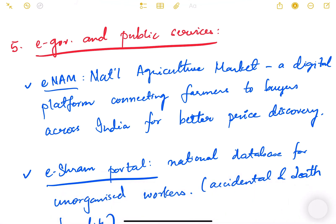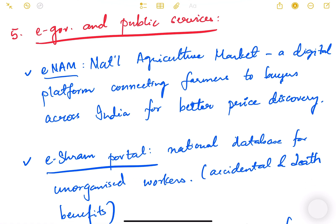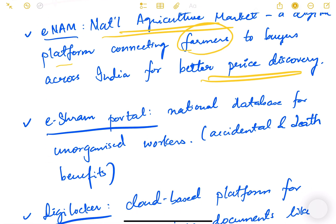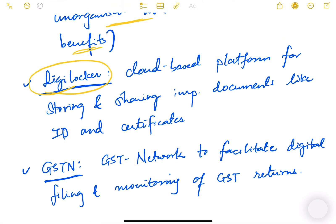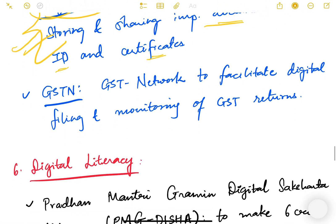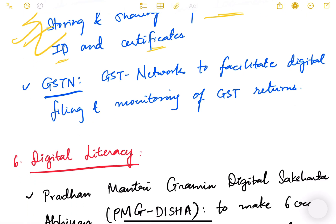Under e-governance initiatives: eNAM (Electronic National Agriculture Market) is a digital platform connecting farmers directly to buyers across India for better price discovery. The eSHRAM portal is a national database for unorganized workers providing accidental and death benefits. DigiLocker is a cloud-based platform for storing and sharing important documents like Aadhaar, driving license, and educational certificates through Aadhaar-enabled authentication. GSTN (Goods and Service Tax Network) facilitates digital filing and monitoring of GST returns.